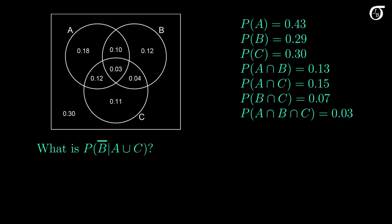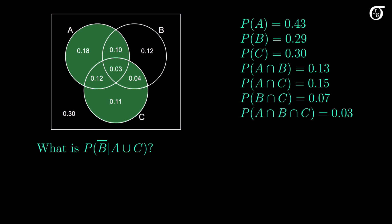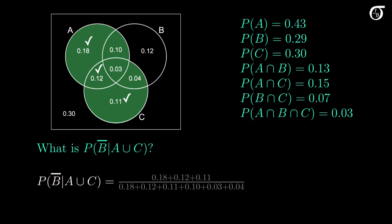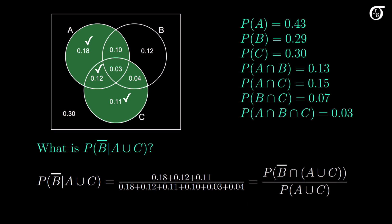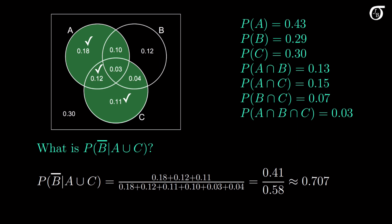What is the probability of B complement given A union C? Conditioning on A union C reduces the sample space down to the green region — A or C, or both. We need to find the probability that we are not in B given we are in this green region. The green regions not in B have probabilities 0.18, 0.12, and 0.11. The conditional probability is the sum of those three — 0.41 — over the total of the six probabilities from the green regions representing the probability of the union of A and C, which is 0.58. This works out to approximately 0.707.